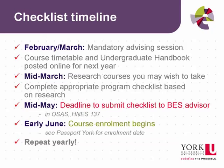Every year in February or March, you are invited to a mandatory advising session. During that time, next year's course timetable is posted online so that you can research and review course options for next academic year. The latest undergraduate handbook is also published on the FES website at that time. The handbook will have the most up-to-date version of the checklist, so you should always use the newest undergraduate handbook and checklist as your guide for the year.